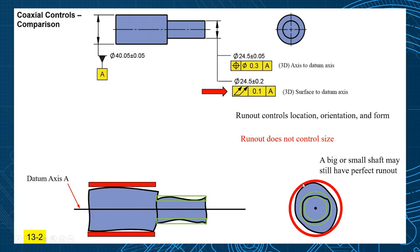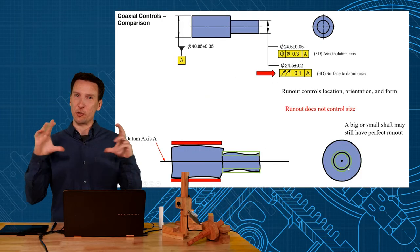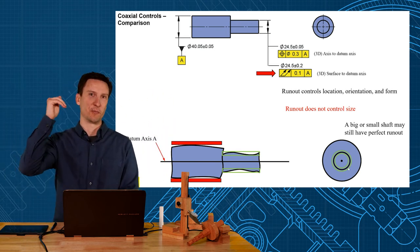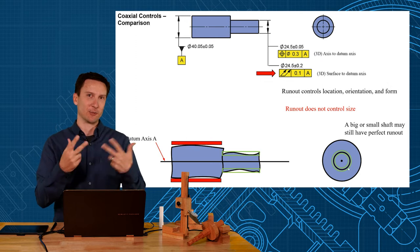Now one big thing you need to understand is run-out does not control size. Size is still depicted by the plus or minus 0.2 here. You could have a big shaft or a small shaft that can still have perfect run-out. This small shaft has perfect run-out, this big shaft has perfect run-out. You can make a big one, you can make a small one, as long as it runs true. Running true is run-out.